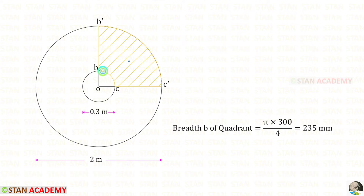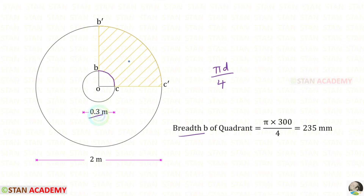We need to find this distance in millimeters and keep it as breadth B. Using the perimeter formula of a circle pi D, and since there is only a quadrant, we divide by 4. Here the diameter is 0.3 m, applied in millimeters. For the breadth B of the quadrant, we get 235 millimeter.